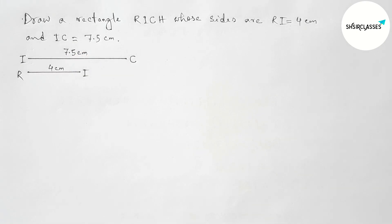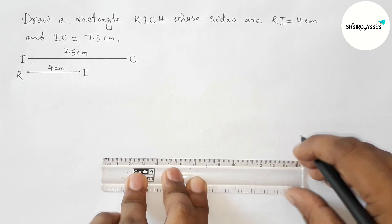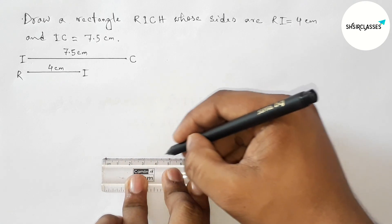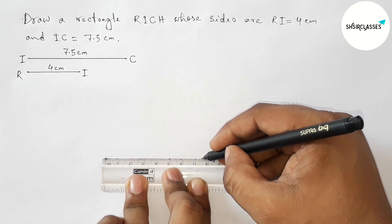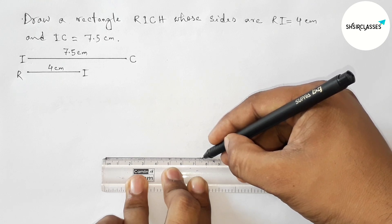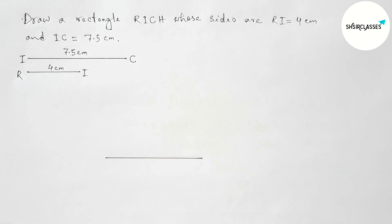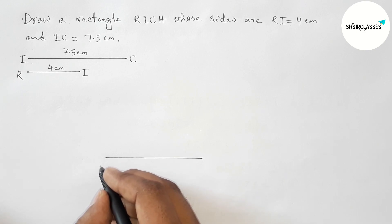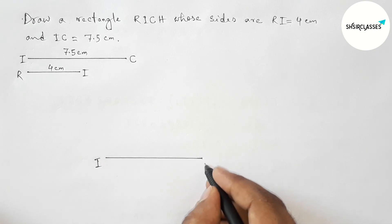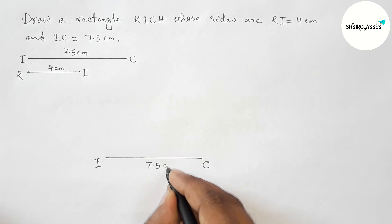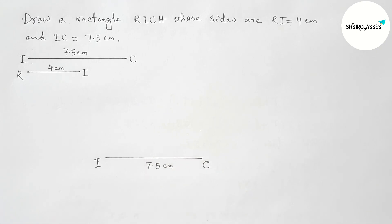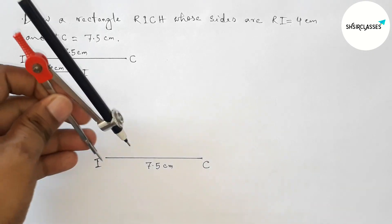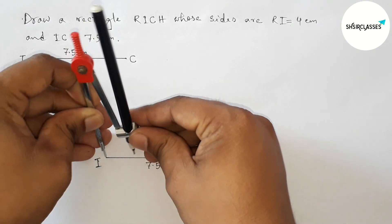Again, we have to draw a line segment of length 7.5 centimeters. This is a 7.5 centimeter line segment. Labeling here — taking point I here and point C here — so IC is 7.5 centimeters. Next, drawing a 90 degree angle at point I with the help of a compass.